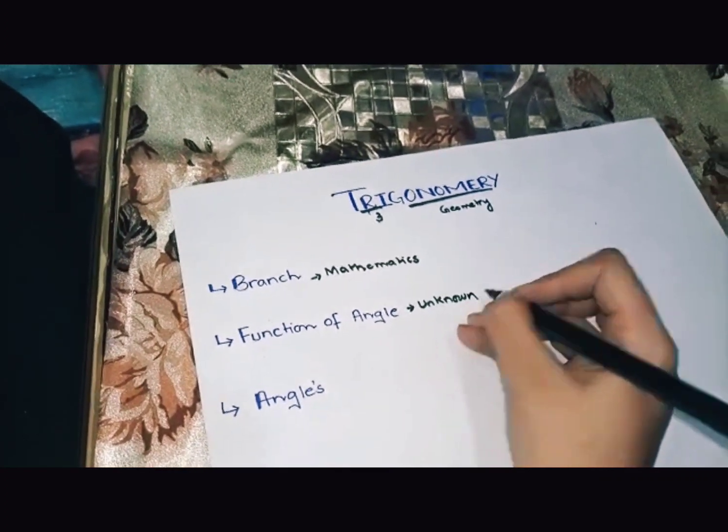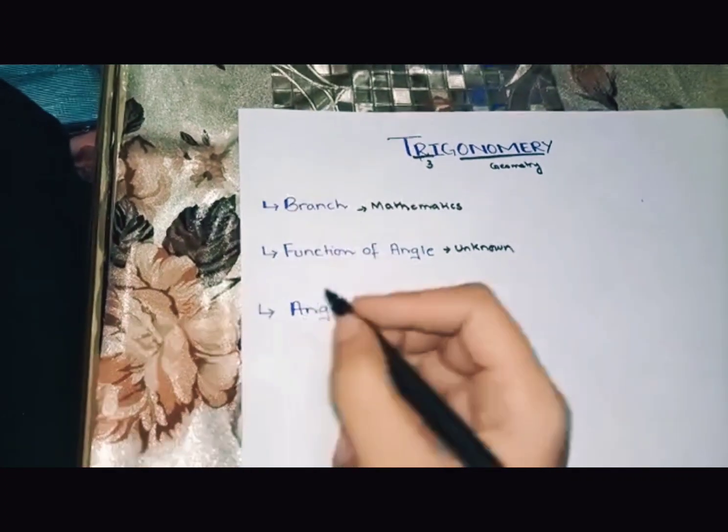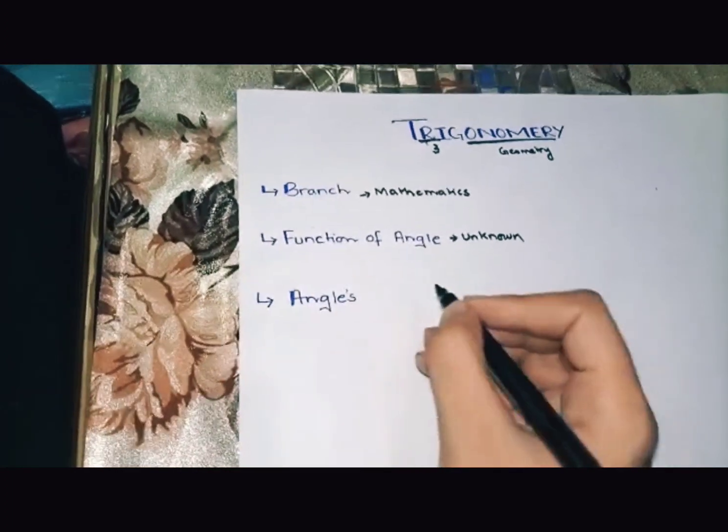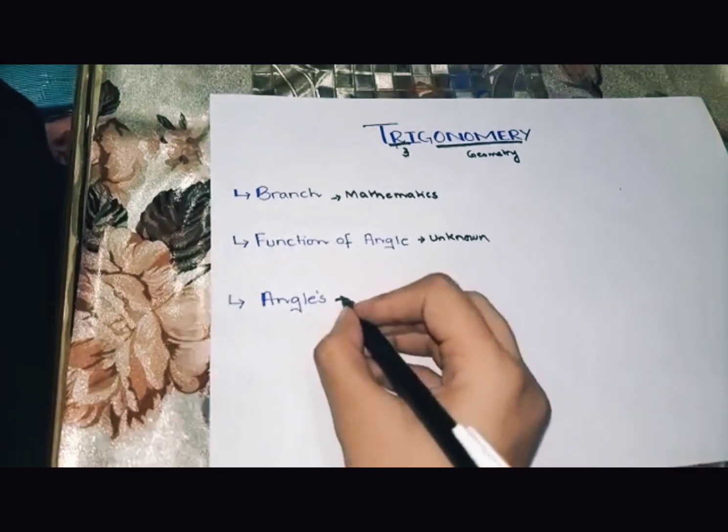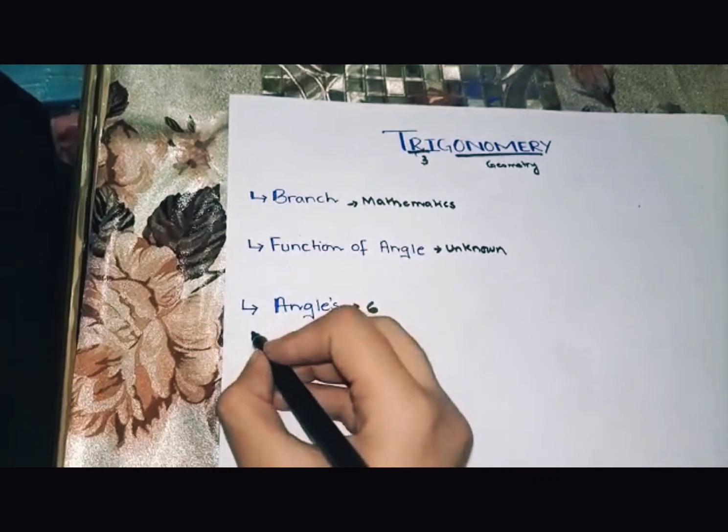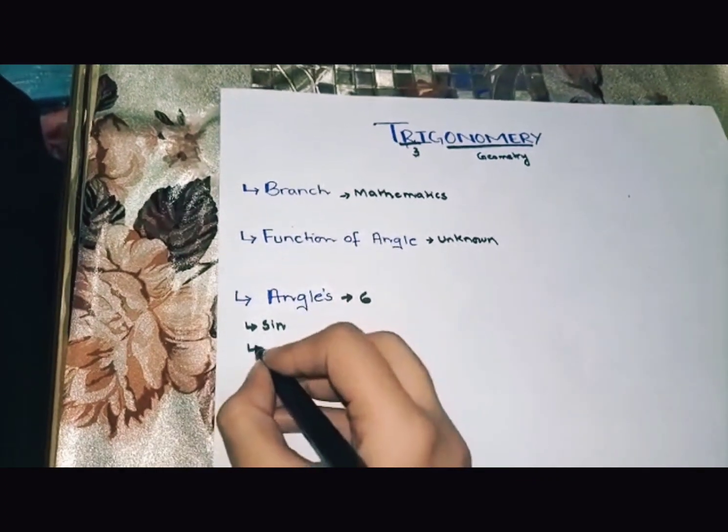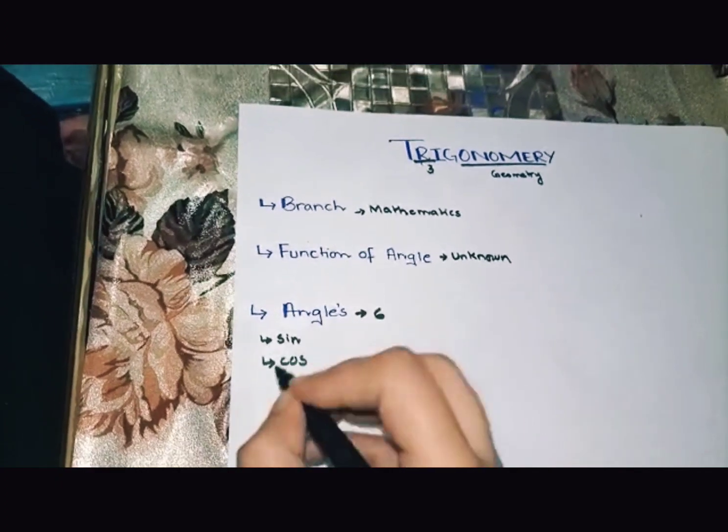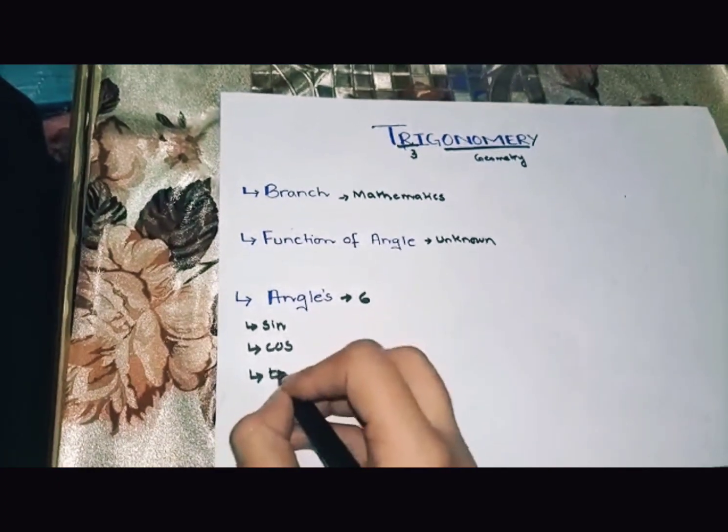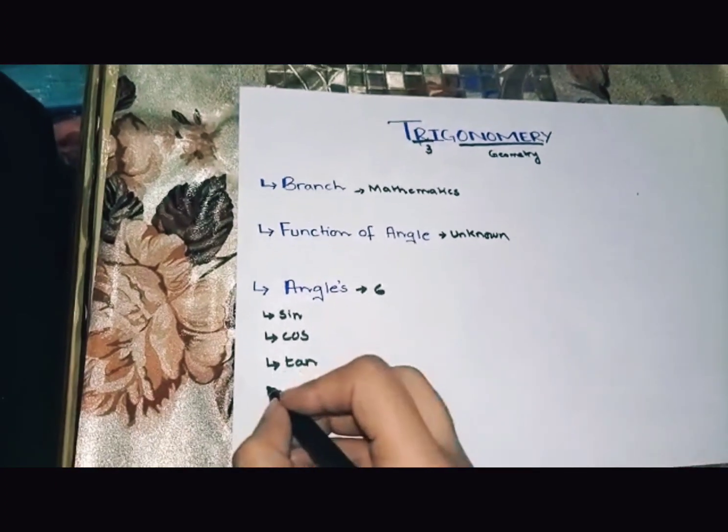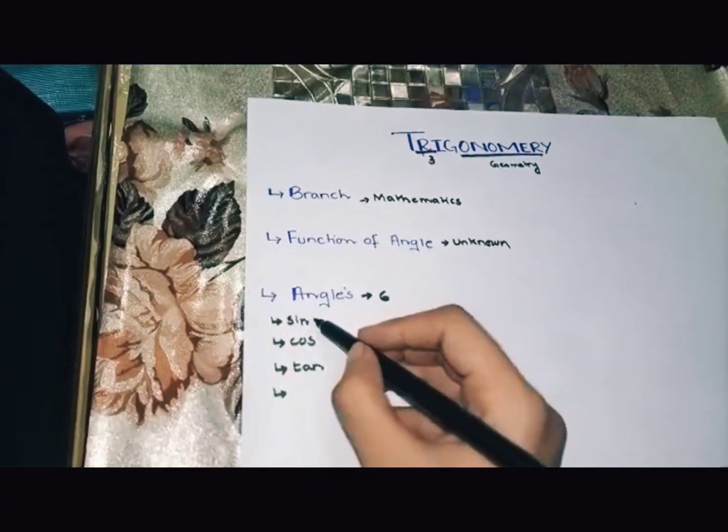The third point is how many angles we have. Mostly we use six angles. Number first is sine. Number two is cos. Number three is tangent. And number fourth, we find the inverse.